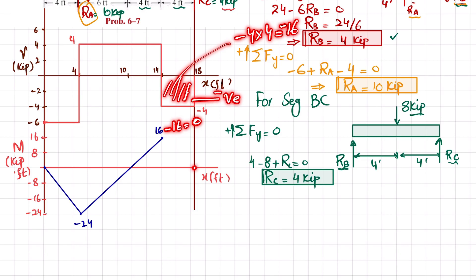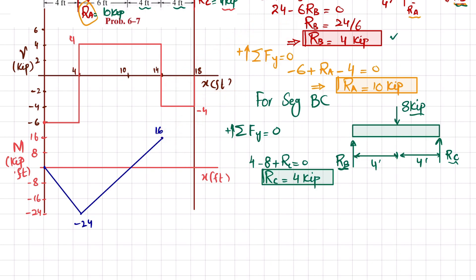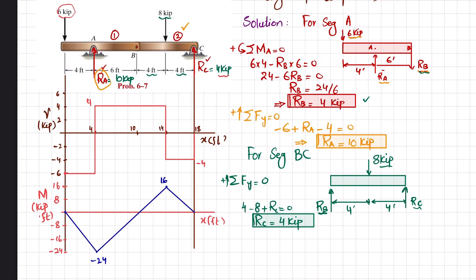Since the third area is negative, the bending moment is one degree higher with decreasing slope, bringing it back to zero. This completes the shear force diagram and the bending moment diagram for Problem 6-7.